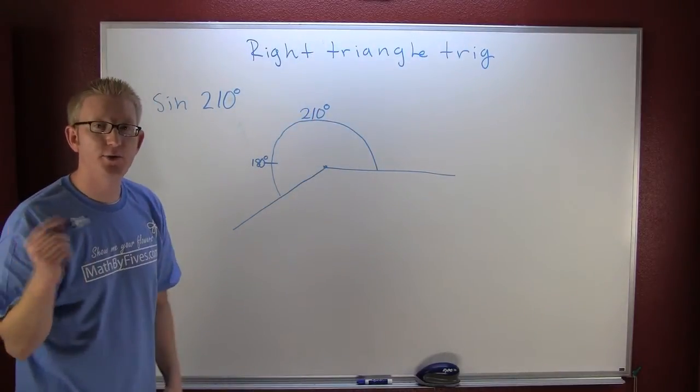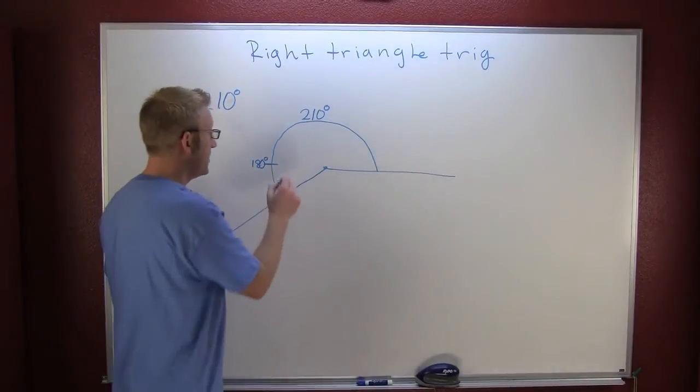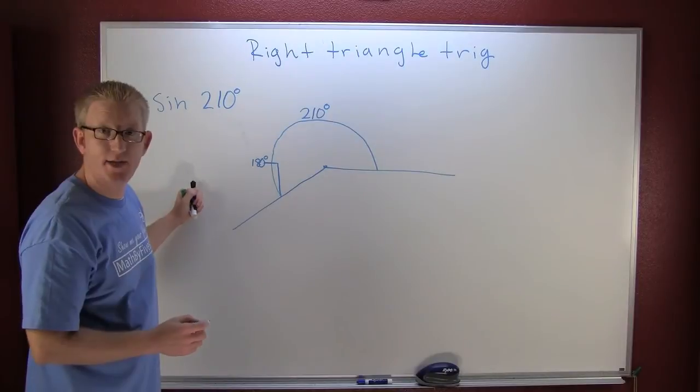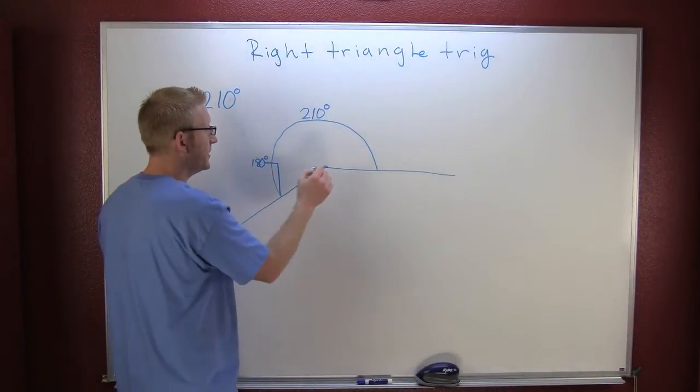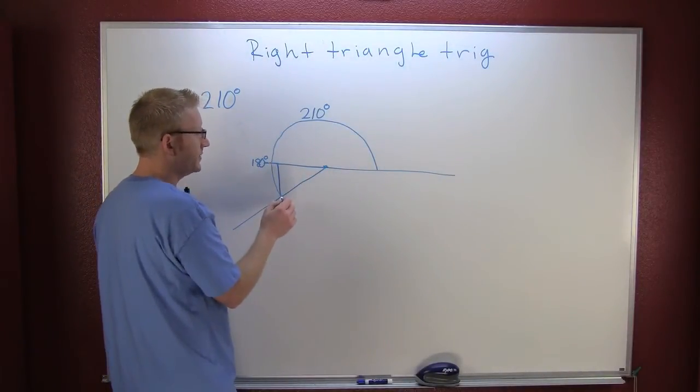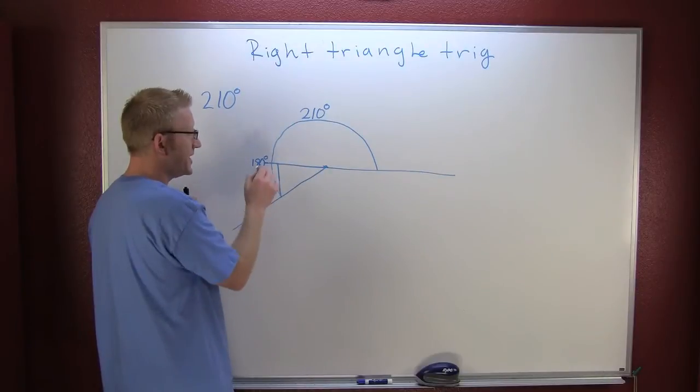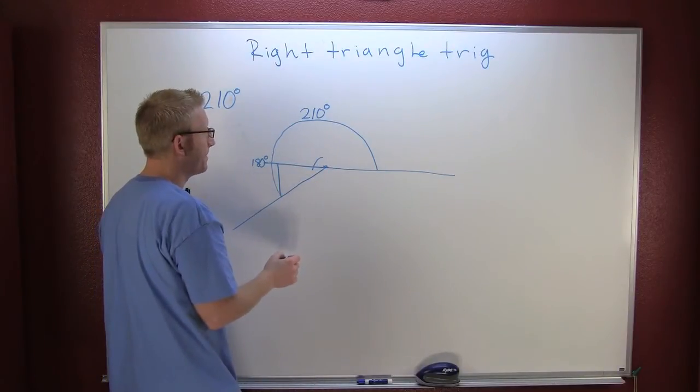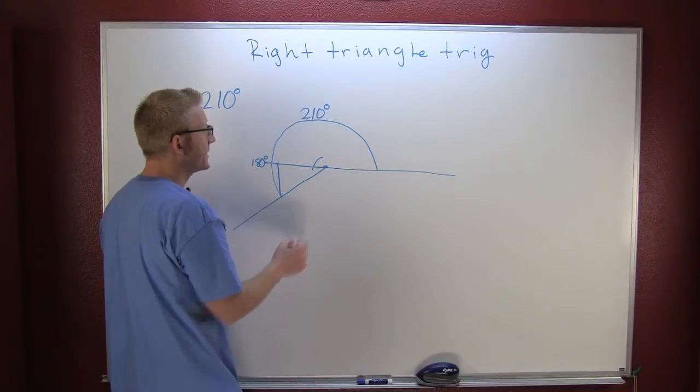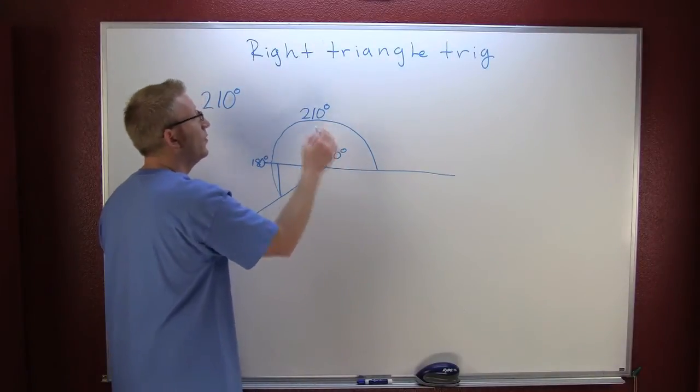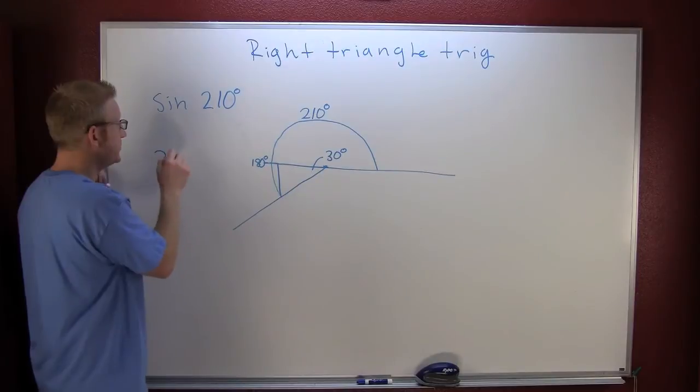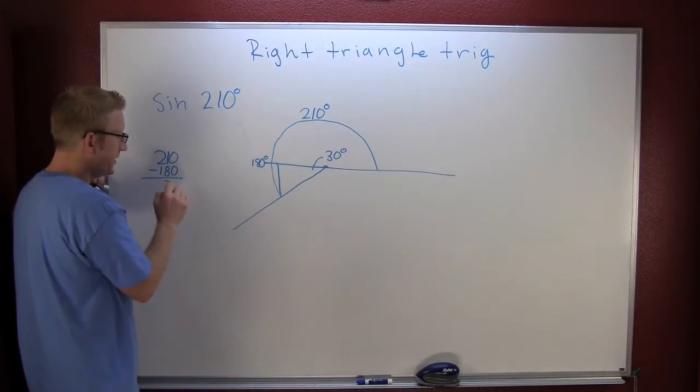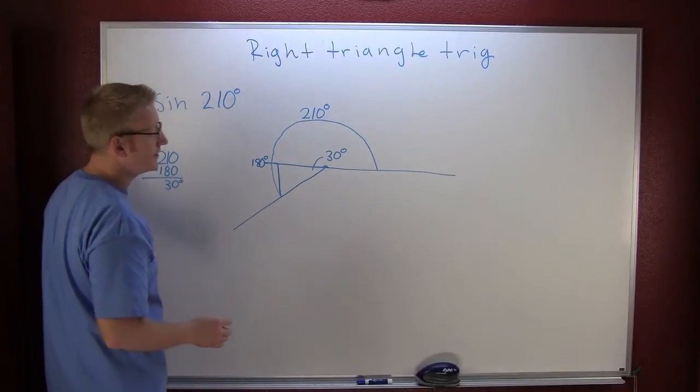Well, what we intend to do here is find a reference triangle. A reference triangle, that's when we draw a perpendicular to the x-axis from the terminal side of that angle. So if this is 210 and that's 180, what degree measure does this have right here? 30. Why? Because that's 210 minus 180. And that's how we get a 30 degree reference angle.